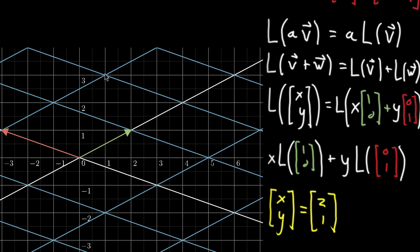But importantly, I want you to notice how it's still 2 times that green vector plus 1 times that red vector. So it's satisfying that property that it's still x times whatever the transformed version of that first basis vector is, plus y times the transformed version of that second basis vector.